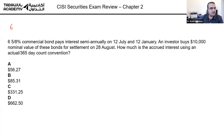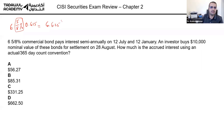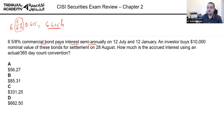A 6 and 5/8 percent bond — let me stop here since for many of you it's been a long time since high school. Five over eight is 0.625, so 6 and 5/8 is actually 6.625 percent. A 6.625 percent commercial bond pays interest semi-annually, so every six months.